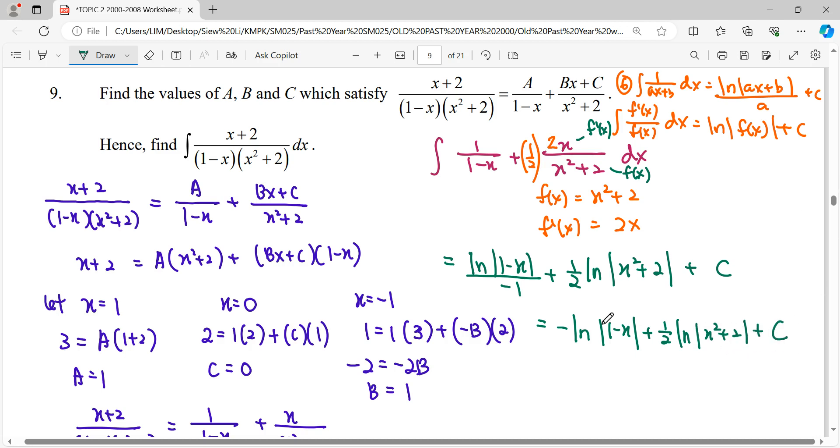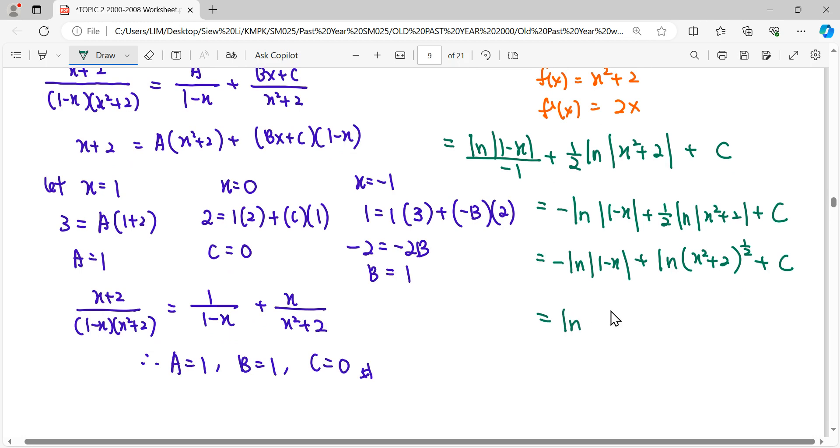If you want to combine these two ln together we can do that. Using your properties of the log, move back the coefficient to become power. Then you can notice that ln minus ln, so the items will be in division in modulus to make sure this log function is always valid.